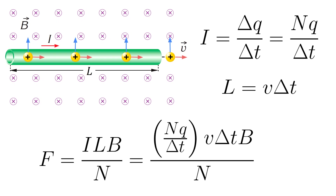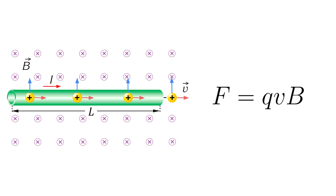Here, the number of charges cancels, and the interval of time also cancels. We are left with only charge, velocity, and the magnetic field. Finally, this is the magnetic force acting on each moving charge. We have derived this from the force acting on the current-carrying wire.